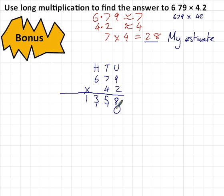New line, write a 0. 4 times 9, 36. 4 times 7, 28. 28 plus this 3, 31. 4 times 6, 24. Plus this 3, and I'm carrying 27.